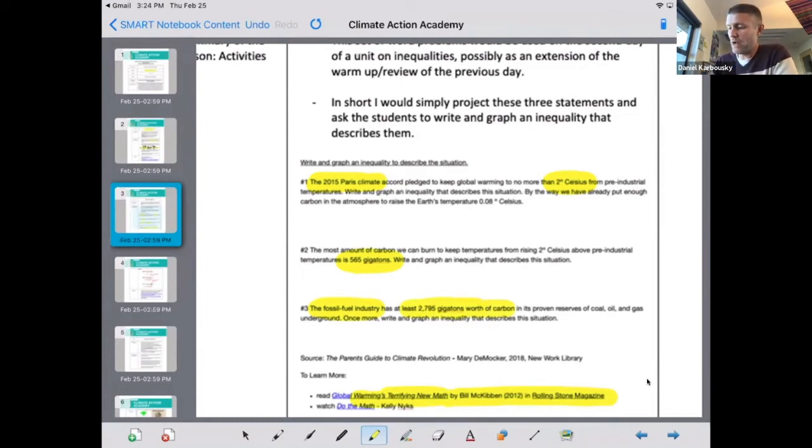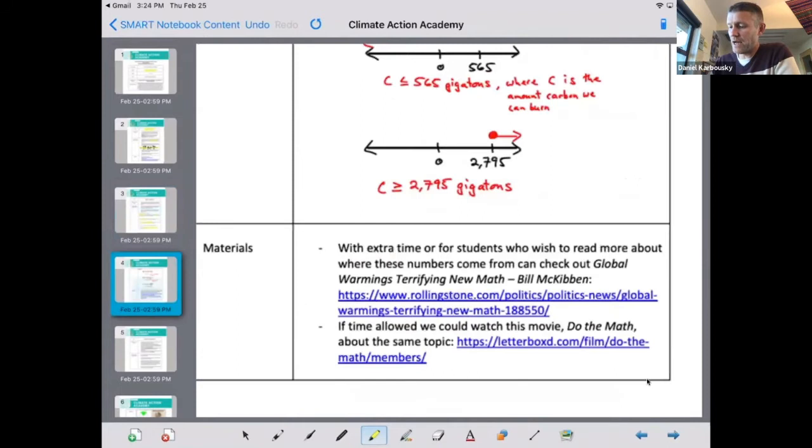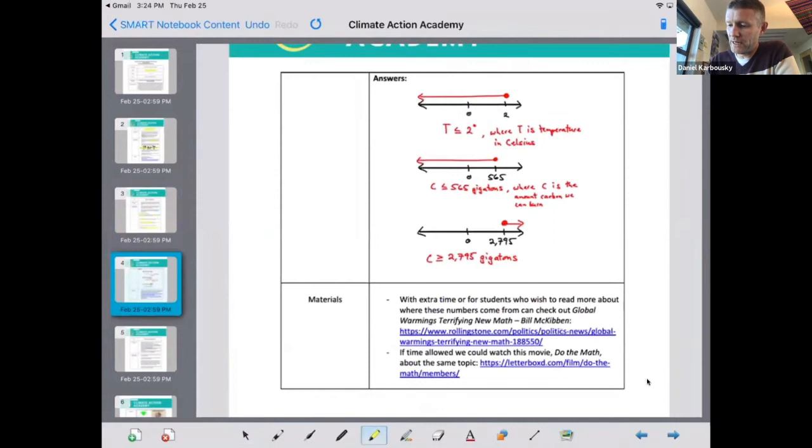And so what you might do in your algebra one class is draw some inequalities with this. So we need to keep things less than or equal to two degrees Celsius. And that means burning less than or equal to 565 gigatons of carbon, but the fossil fuel industry has 2795 gigatons. So not only are you hitting the lesson that you're trying to achieve, but it brings home to the students the situation at hand. I will keep going. So those are some algebra one applications.